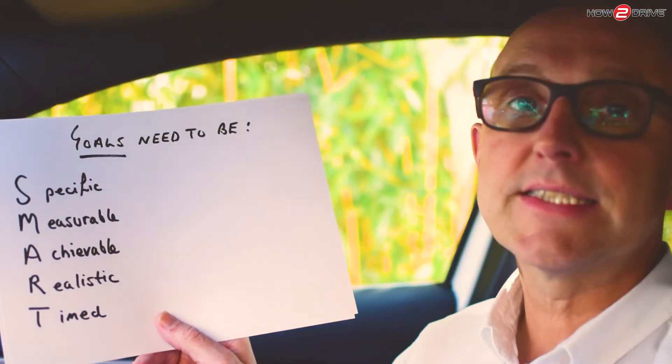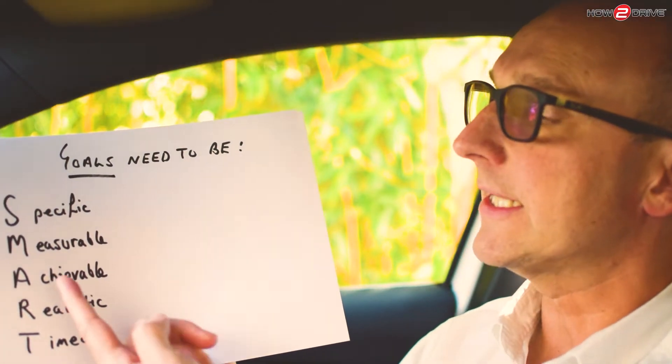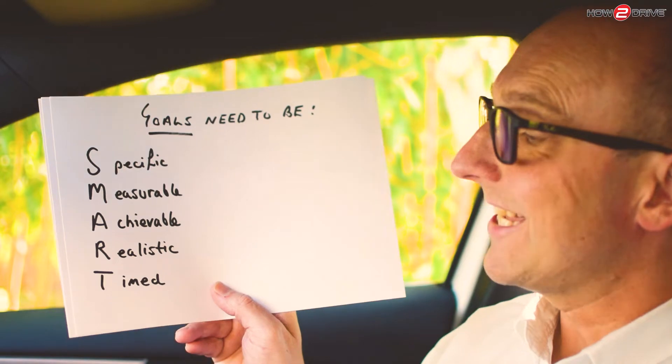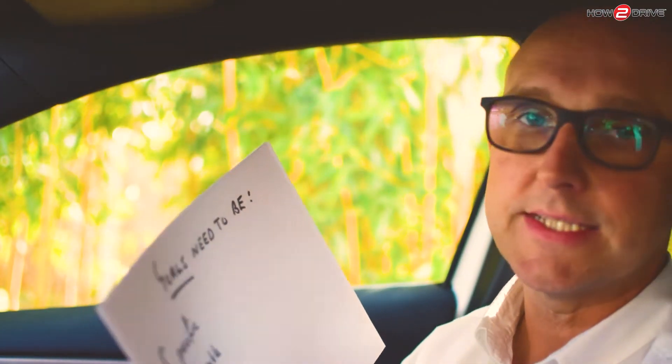Now I'd like to talk about SMART goals. Many of you will have heard about SMART goals previously, but let me cover that too. Goals need to be SMART: Specific, Measurable, Achievable, Realistic, and Timed. If we can follow those five elements when setting goals for our pupils, it will really focus the goal and you're more likely to achieve it.